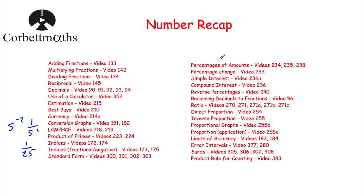Percentage of amounts: make sure you know how to work out percentages of amounts without a calculator — divide by 100, then multiply by the percentage you want — but also with a calculator. Alternatively, use your multiplier: to find 62% of a number just multiply by 0.62; to increase by 7% multiply by 1.07. For percentage change, remember it's change divided by original times 100.